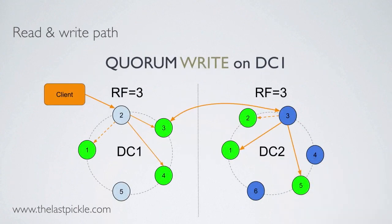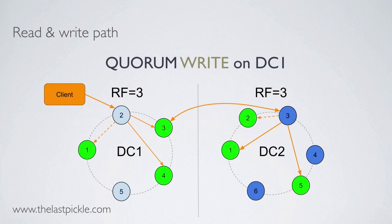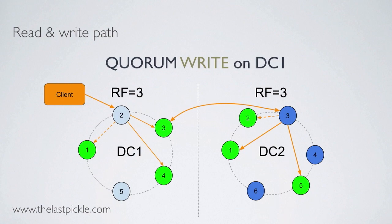Here's a quorum write on DC1. The client will connect to a coordinator node in DC1 and expect a quorum of answers across the overall cluster. So if DC1 cannot provide enough answers, it will go to replicas on DC2. There's an interesting optimization: only one arrow between DCs, so only one set of values will be sent, and then the coordinator is responsible for spreading data to the replicas of its local DC.